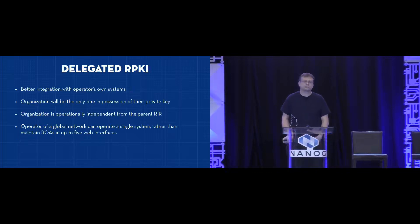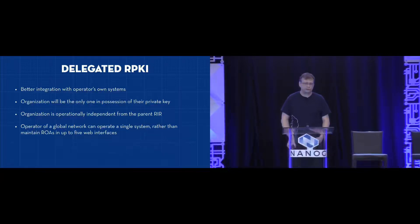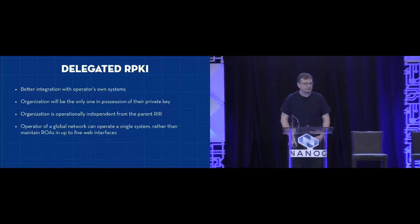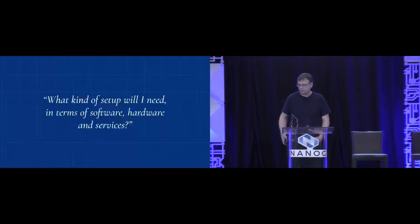Why would you then want to run your own CA? Normally it comes down to having lots of resources — clicking around in a web interface gets tedious very quickly, particularly if you are under multiple RIRs with different interfaces. Whereas if you run your own thing, you can integrate it directly into the way you provision your routes and infrastructure. You will also be in possession of your own private keys, which is important for some people, and you are operationally independent from the RIR itself.